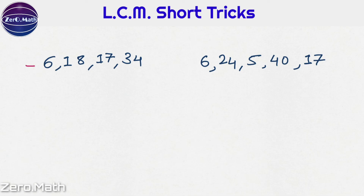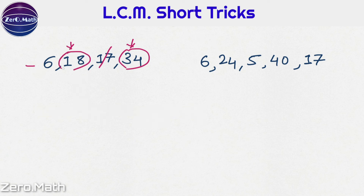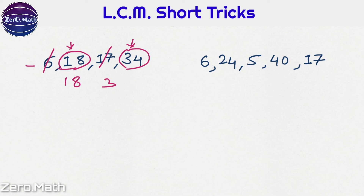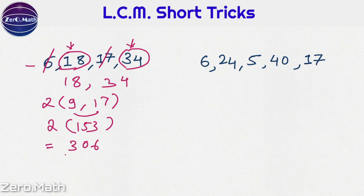Let's increase the complexity. Find the LCM of this set of numbers. The largest number here is 34. Check: 34 is divisible by 17 — cancel it out. The rest of the numbers are 18 and 6, and 34 is not divisible by these. Find the second largest number, which is 18: it is completely divisible by 6, so cancel 6 out — the LCM of 18 and 6 is 18. Now we have only two candidates: 18 and 34. Using common factors: 18 = 9 × 2 and 34 = 17 × 2, so LCM = 17 × 9 × 2 = 306.